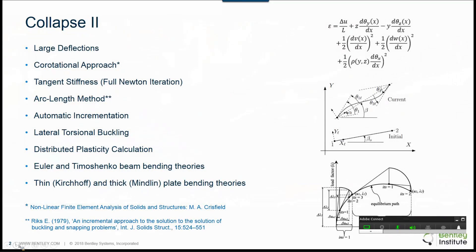This slide here shows some of the new functionalities of the new program. Collapse II accounts for both large deflections via the inclusion of second order strains and large rotations, also termed as the co-rotational approach.